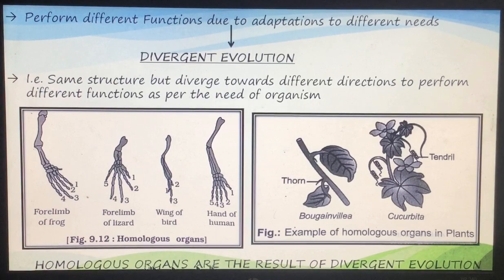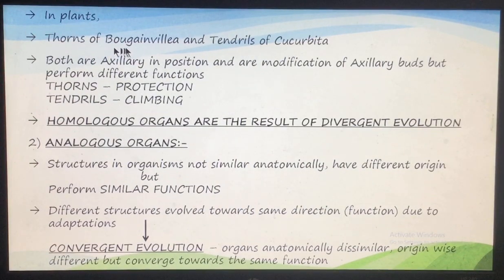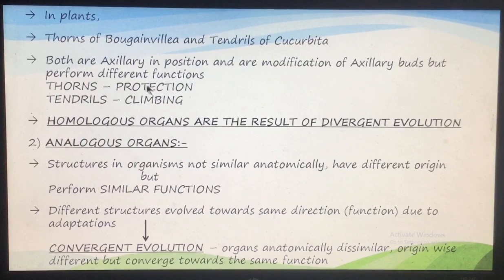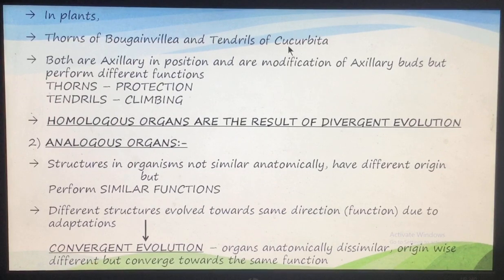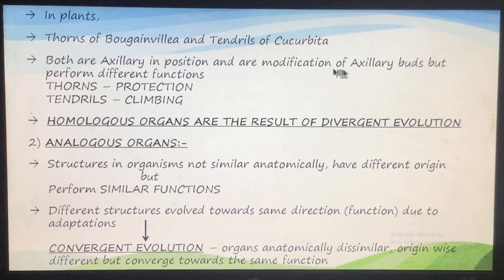So homologous organs are the result of divergent evolution. In plants, the function of the thorns of bougainvillea is to protect the plant from grazing, while the tendrils of Cucurbita function for climbing, because the stem of Cucurbita is very thin and cannot expose the leaves to sunlight for photosynthesis. So tendrils are present for climbing. Their origin is the same - both are axillary in position and are modifications of the axillary bud - but they perform different functions. These are homologous organs, and they are the result of divergent evolution. This is the first evidence of evolution.